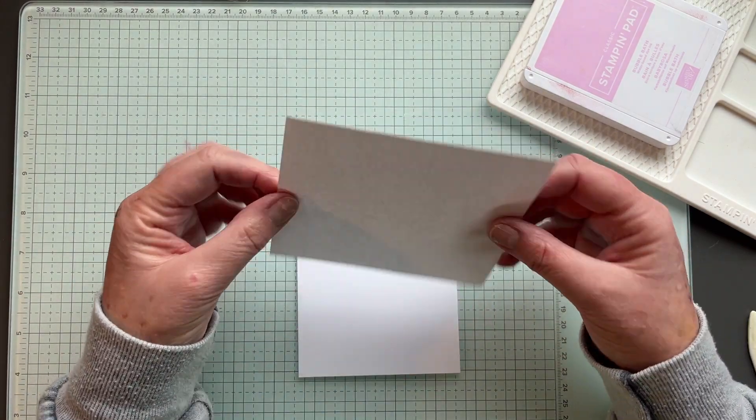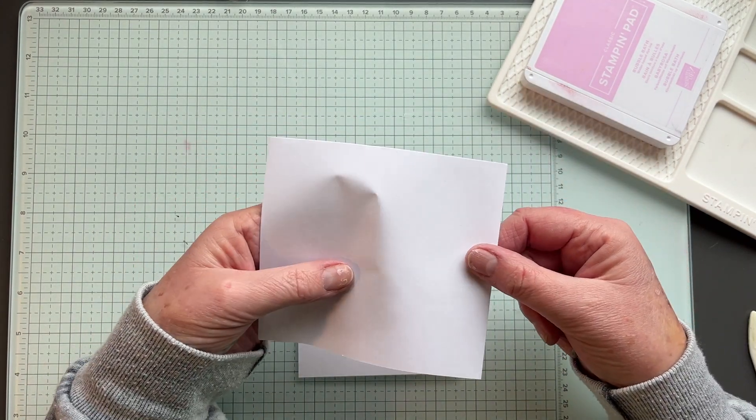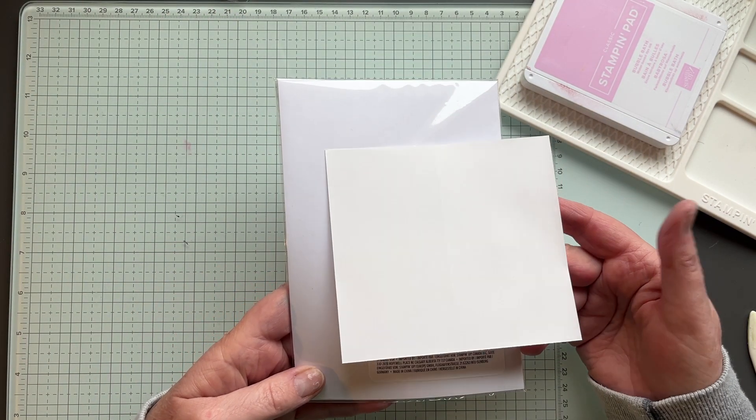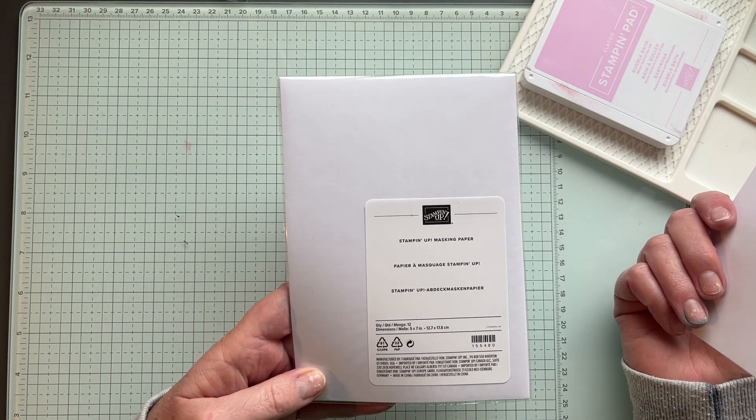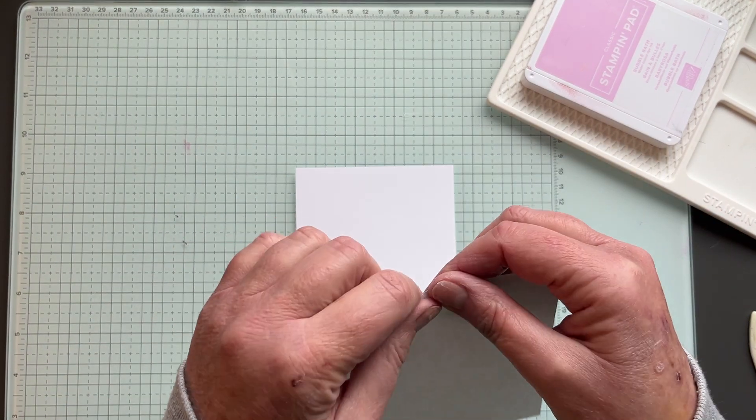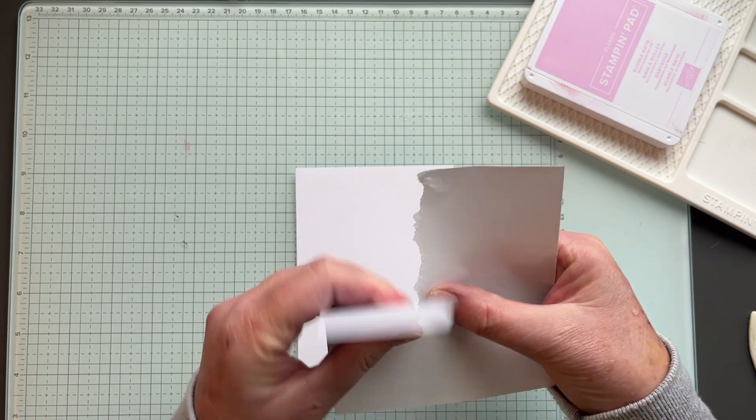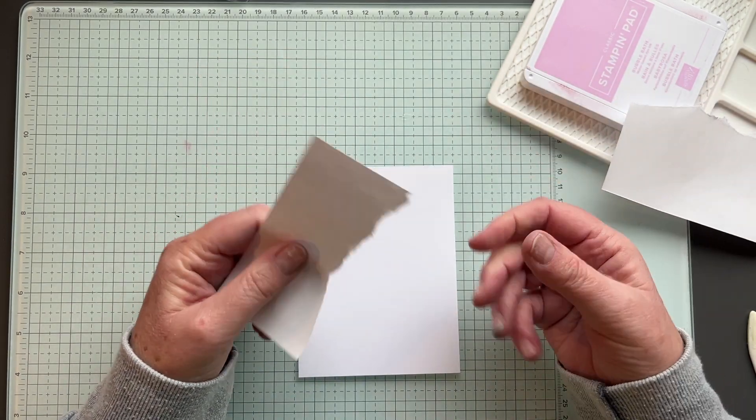Then we're going to use a piece of our masking paper. This is Stampin' Up's masking paper. It comes in this size. This is just an extra piece I had laying around. And we're going to tear it. So just rip it. It doesn't matter. Just like that.